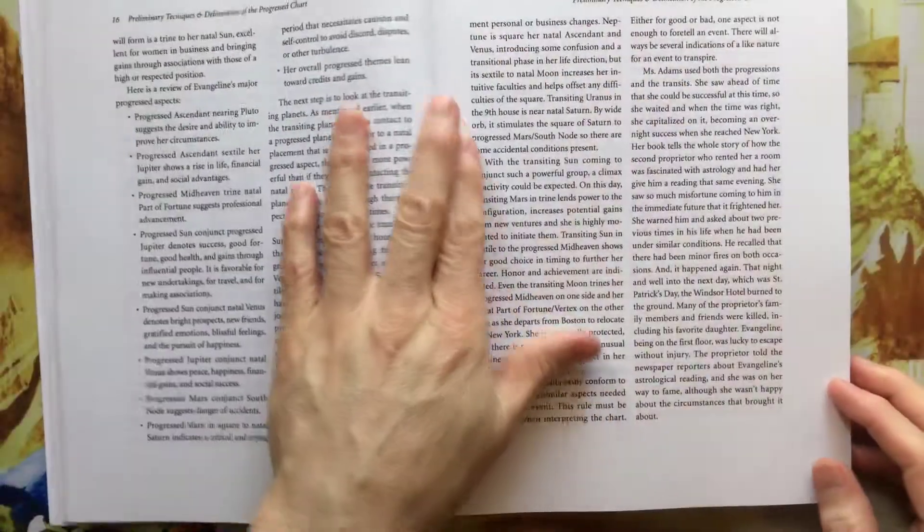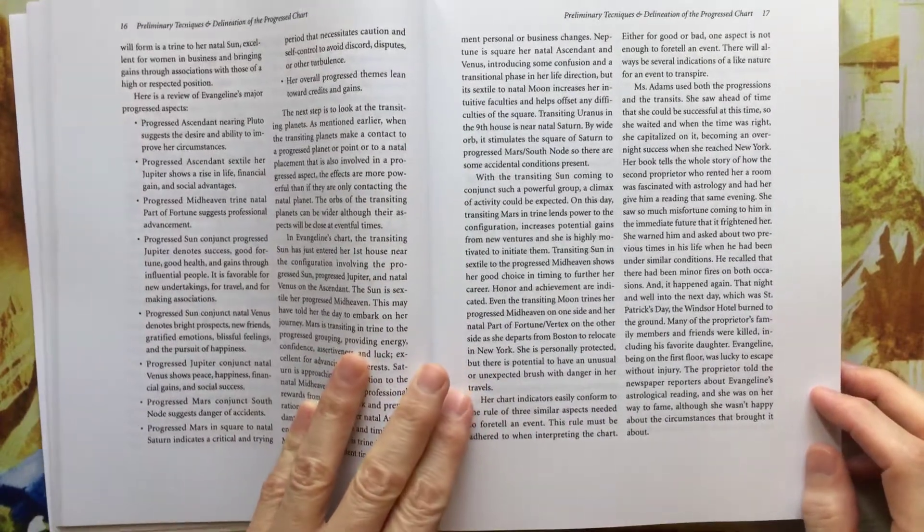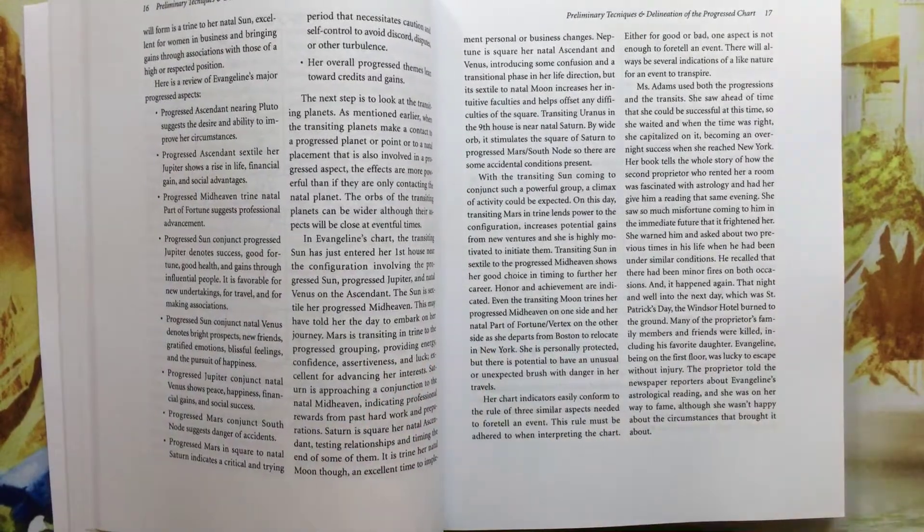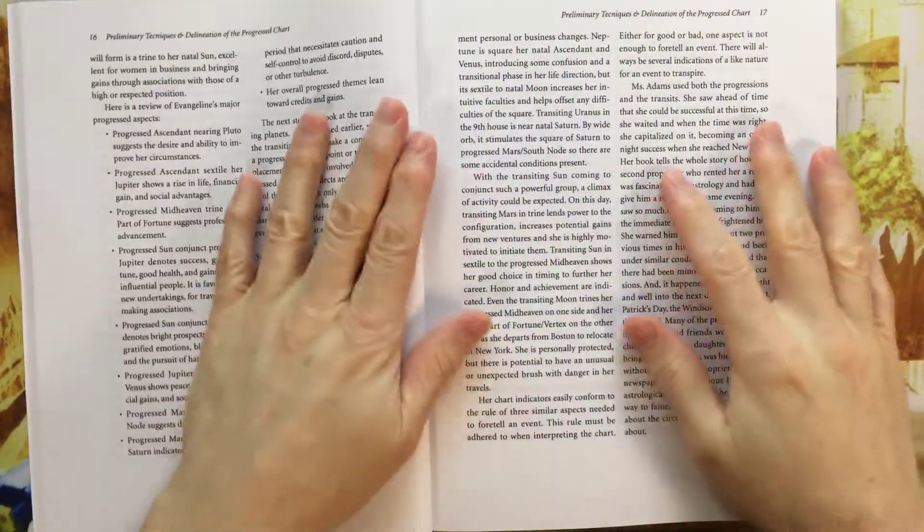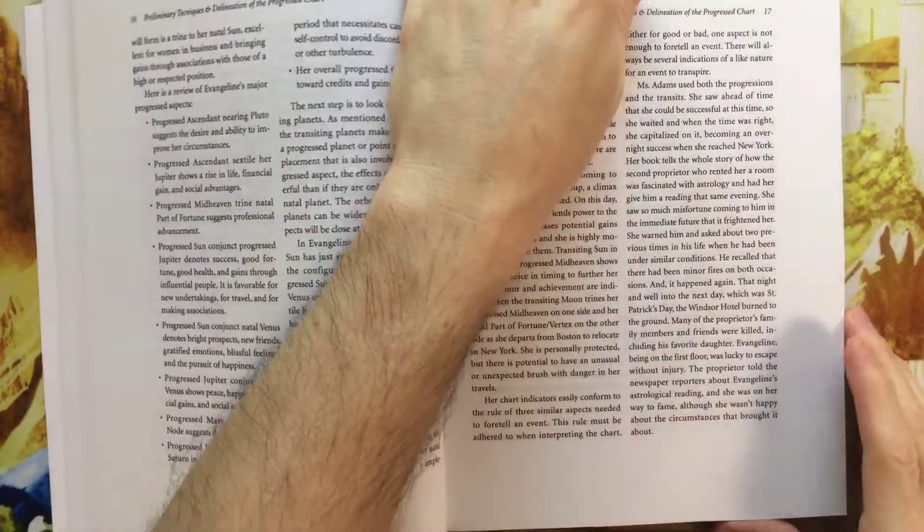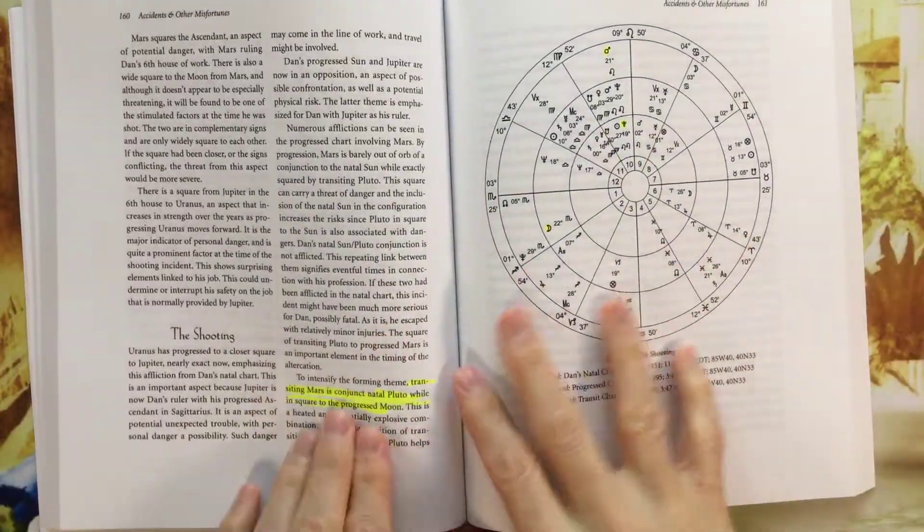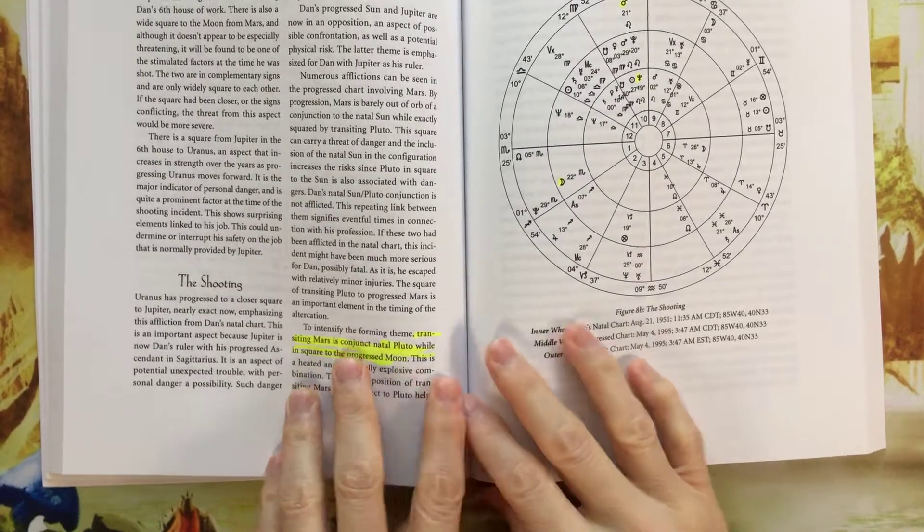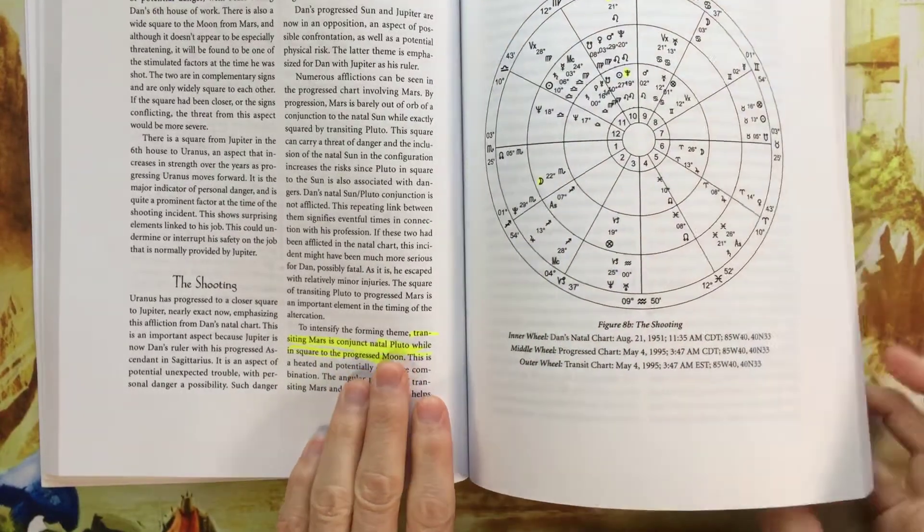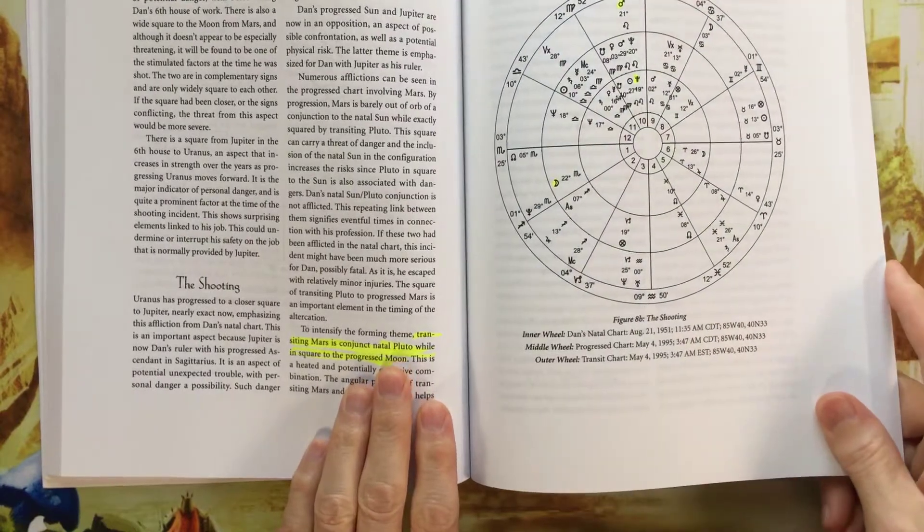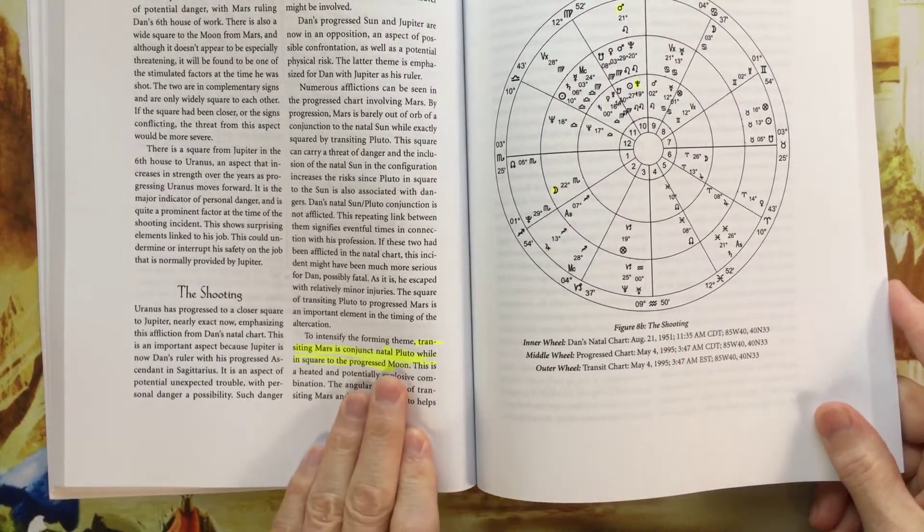In addition, some of the material is, I would say, intermediate to advanced. So let me turn on the light. So some of the material, I think, in my opinion, is intermediate to advanced. So I bookmarked a copy here. So this sentence basically says, to intensify the theme, transiting Mars is conjunct natal Pluto while in square to progressed moon, right?